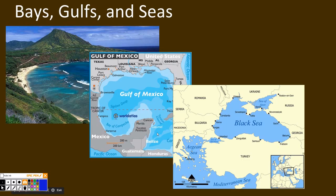A bay is formed by wave action, carving out an area of land during water weathering and erosion. One way a gulf forms is if water weathering and erosion take place over an even longer period of time, and a bay grows very large to form a gulf. A sea can form if tectonic plate movement closes in a large bay.